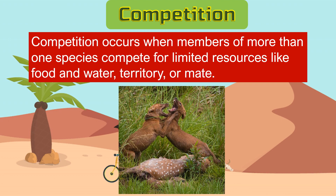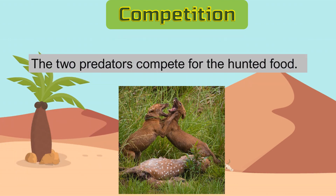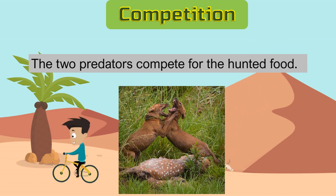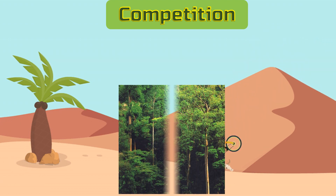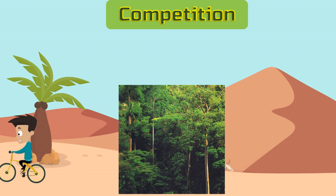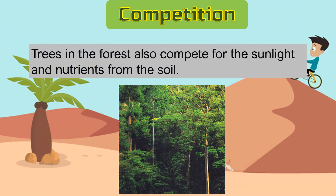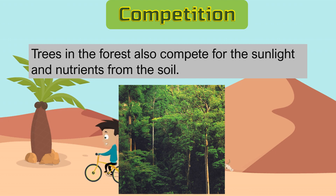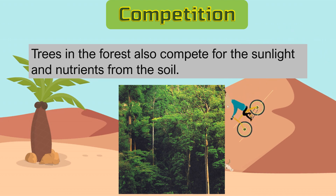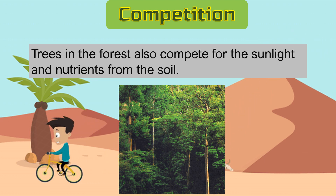Example: two predators compete for the hunted food. Sa larawang ito, ay makikita ang dalawang hayop na nag-aaway dahil sa kanilang nakuhang pagkain. Madalas, nananalo ang mas malakas. Next, are the trees in the forest. They compete for the sunlight and nutrients from the soil. This is one of the reasons why trees in the forest vary in size and height. Ang mga puno sa kagubatan ay isa ding halimbawa na nagpapakita ng kompetisyon. Nagpuunahan sila na makakuha ng liwanag galing sa araw at sustansya o pagkain galing sa lupa.